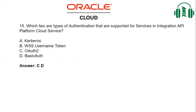Which two are types of authentication supported for services integration API Platform Cloud Service? Option A: Kerberos. Option B: WSS username token. Option C: OAuth2. Option D: Basic authentication. From these four options, everyone knows D is supported because that is basic — basic authentication is supported.